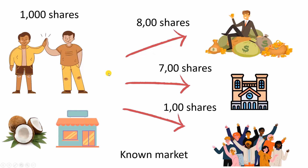When an IPO is oversubscribed, a computer automatically allots shares to people. It is like a lottery system — randomly the computer allots shares. So only 1000 shares can be given out, but many individuals want 800 shares, many financial institutions want 700 shares, and many people like you and me want 100 shares. Using a lottery system, the shares are allotted to them.